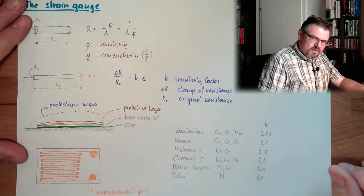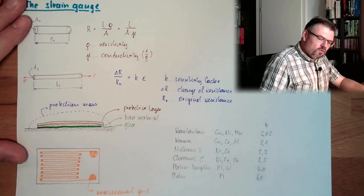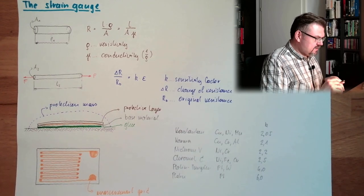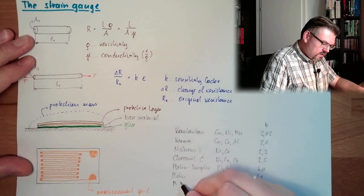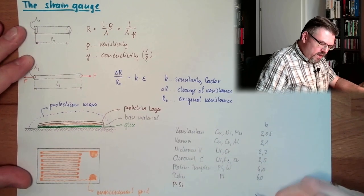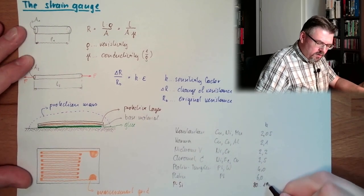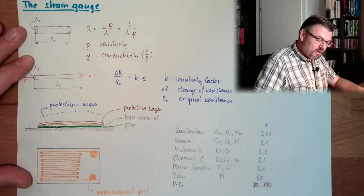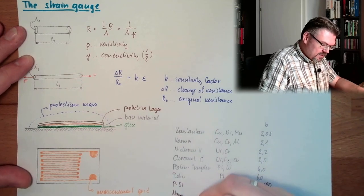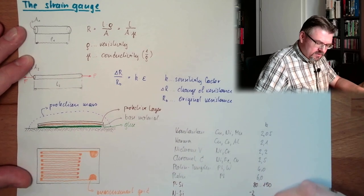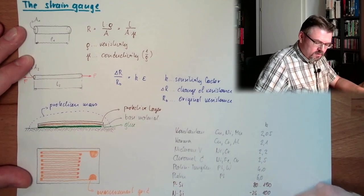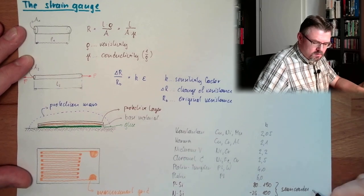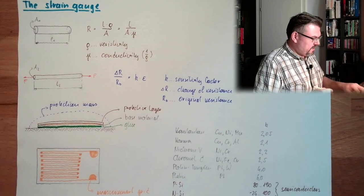These are metallic things. But then we have also non-metallic materials. There might be, for instance, positive p-silicon. Here we have 80 to 190. Much more than here. And then we have n-silicon. Minus 25 up to 100. So these are semiconductors. And these are metals here.